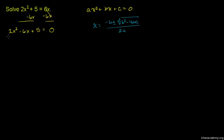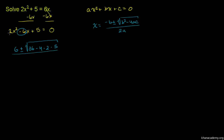Let's apply that to this situation. Negative b — b is negative 6, so negative b is positive 6. Plus or minus the square root of b squared: negative 6 squared is 36, minus 4 times a, which is 2, times c, which is 5. All of that over 2 times a, which is 2, so 2 times 2 is 4.